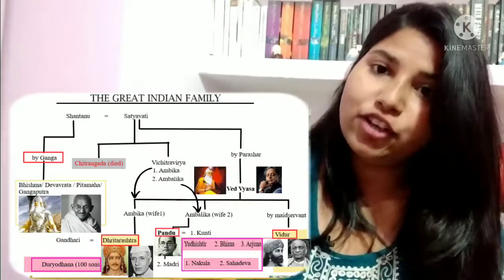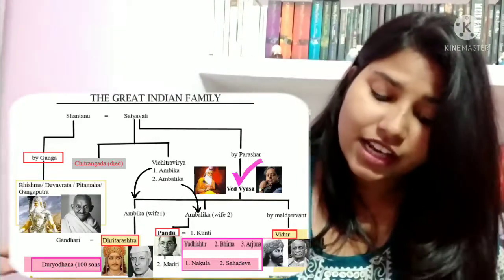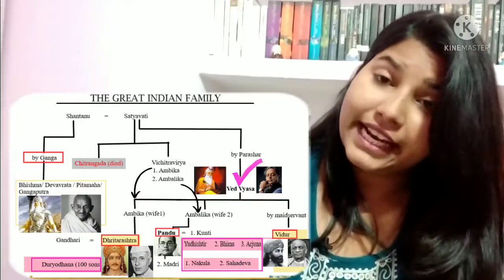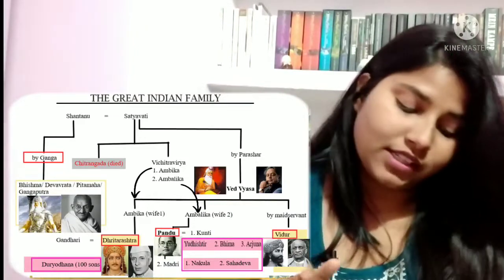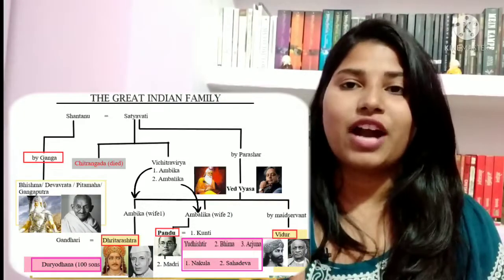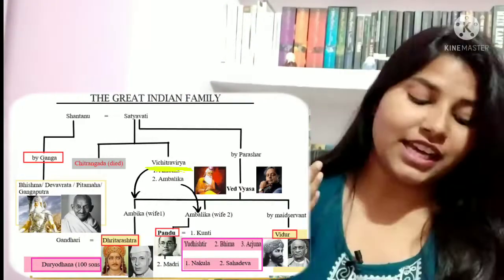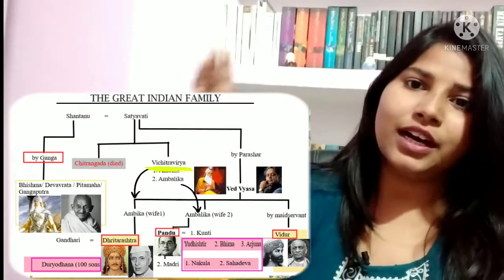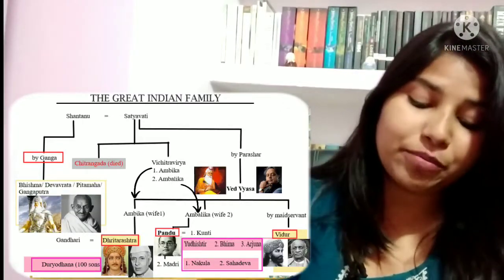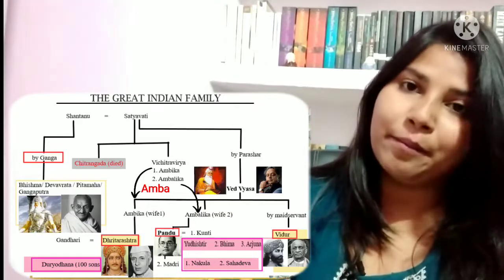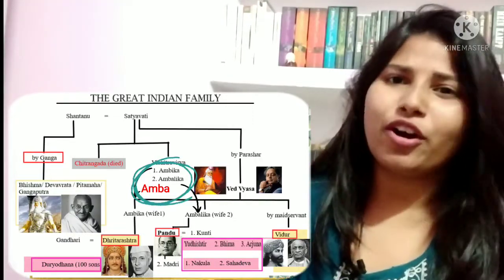Shantanu is then officially married to Satyavati, who already had a son called Vedvyas by a saint called Prashar. When Shantanu and Satyavati marry, they have two sons: Chitrangad and Vichitravarya. Chitrangad died at a very early age, leaving only Vichitravarya. Gangadat became the regent king of Hastinapur. He captured three princesses — Amba, Ambalika, and Ambika — who were all to be married to Vichitravarya.